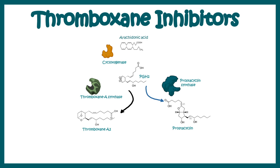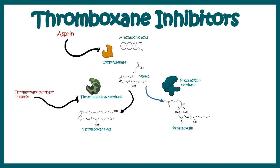Thromboxane inhibitors are important to treat these diseases. At a molecular level, inhibitors can work at the cyclooxygenase level — for example, aspirin can block thromboxane production by blocking cyclooxygenase. Additionally, thromboxane-selective synthesis inhibitors can inhibit thromboxane A synthase, the rate-limiting step of thromboxane biosynthesis. Finally, thromboxane receptor antagonists can prevent thromboxane A2 from binding to its receptor, thereby preventing thromboxane signaling.